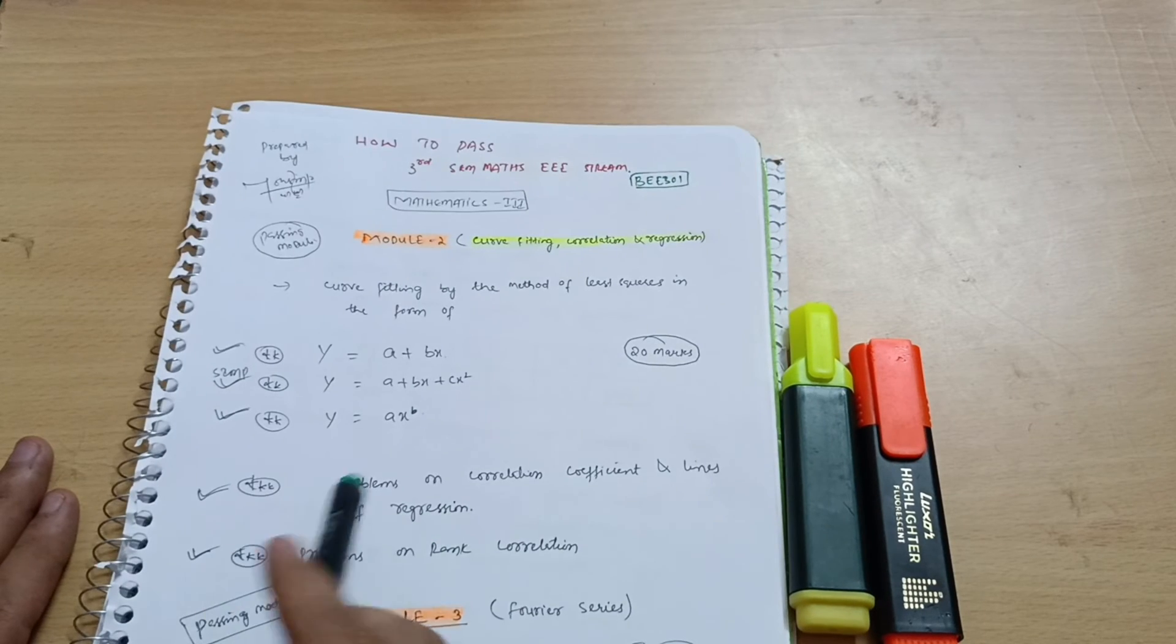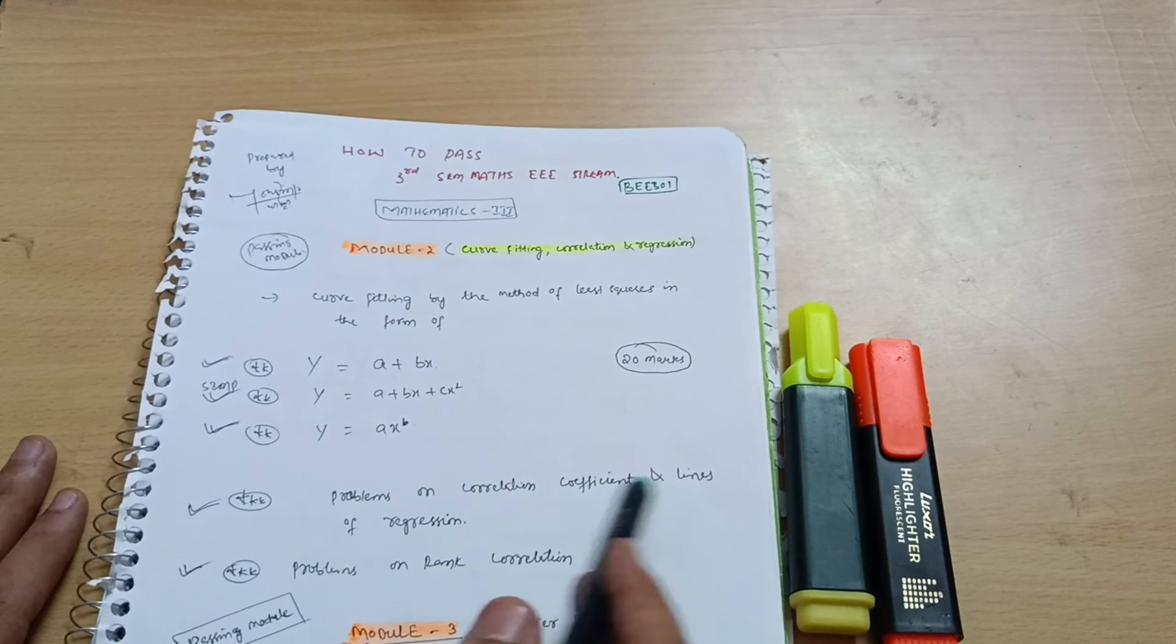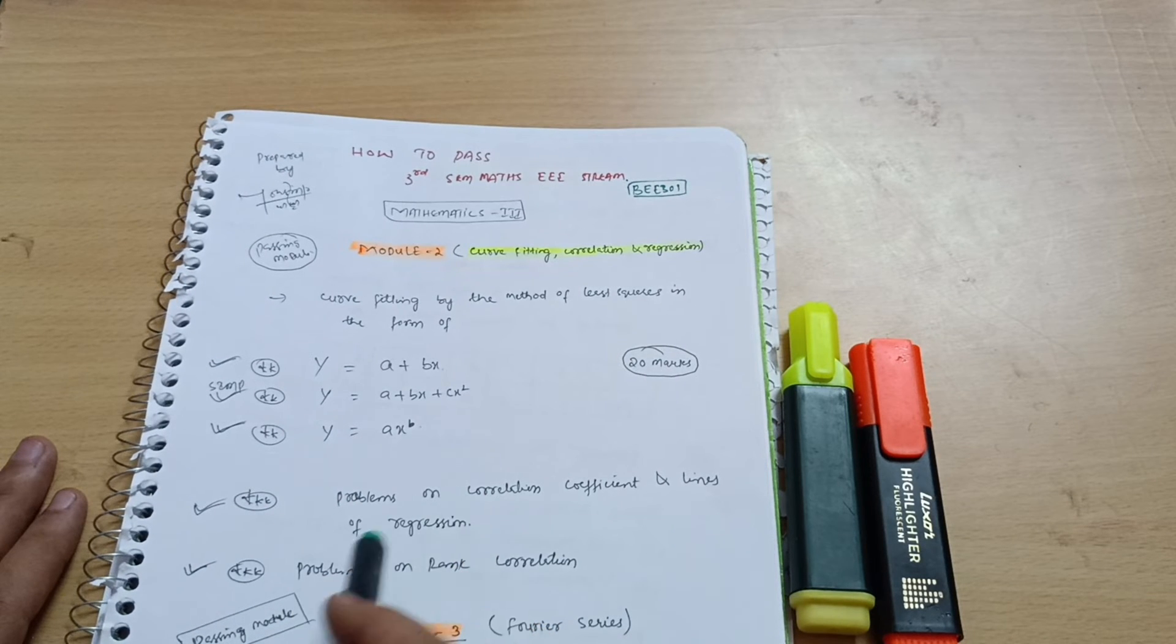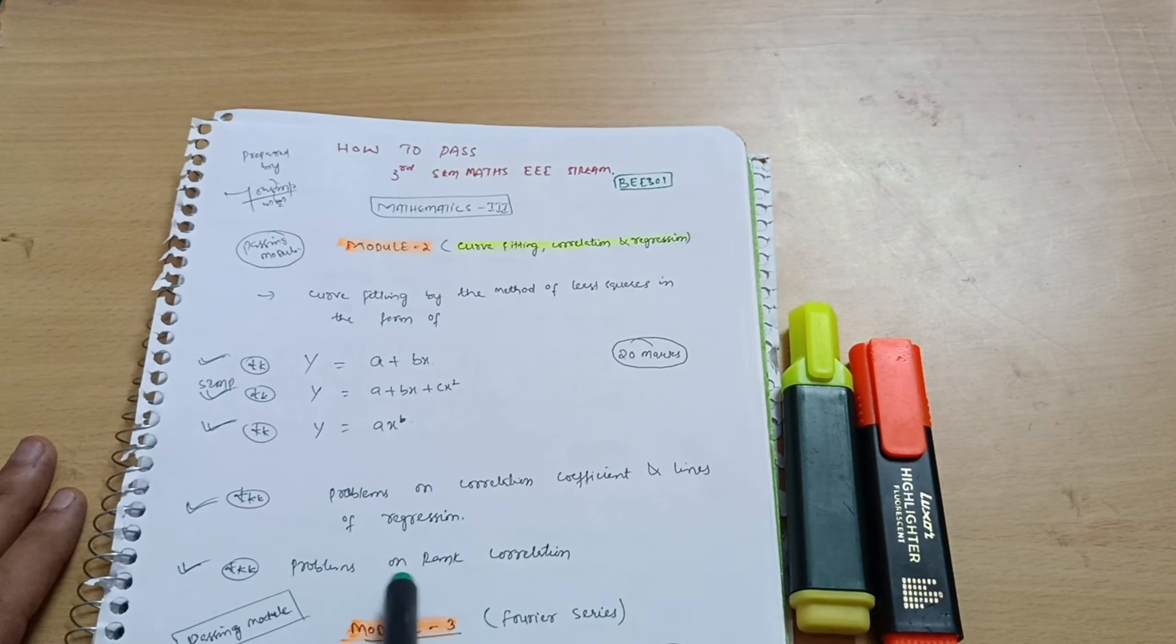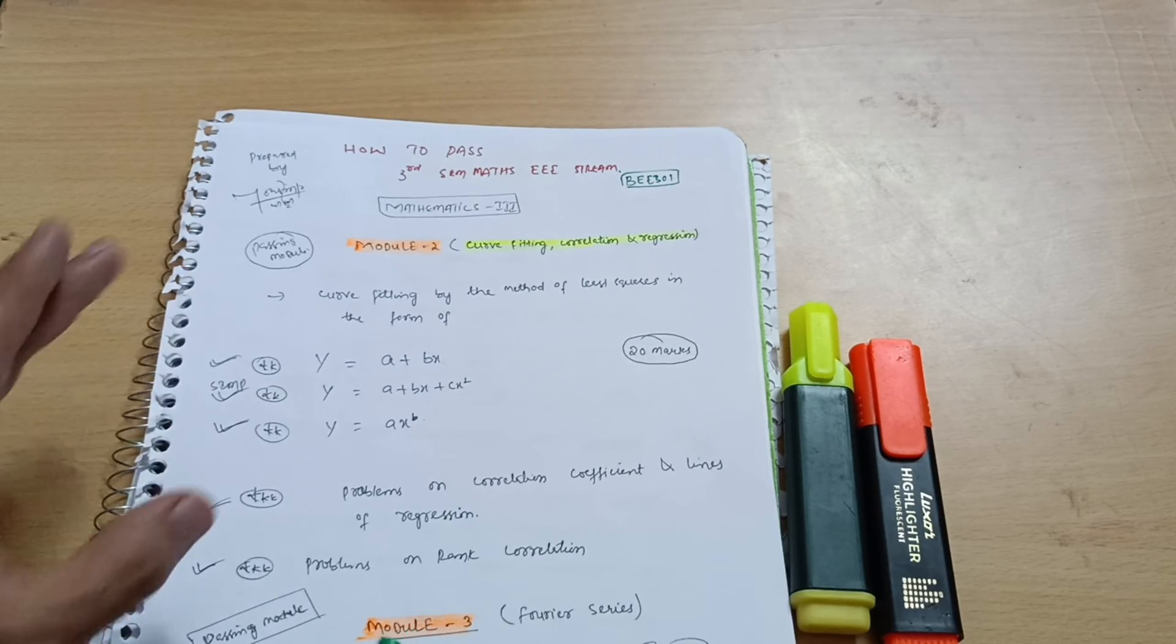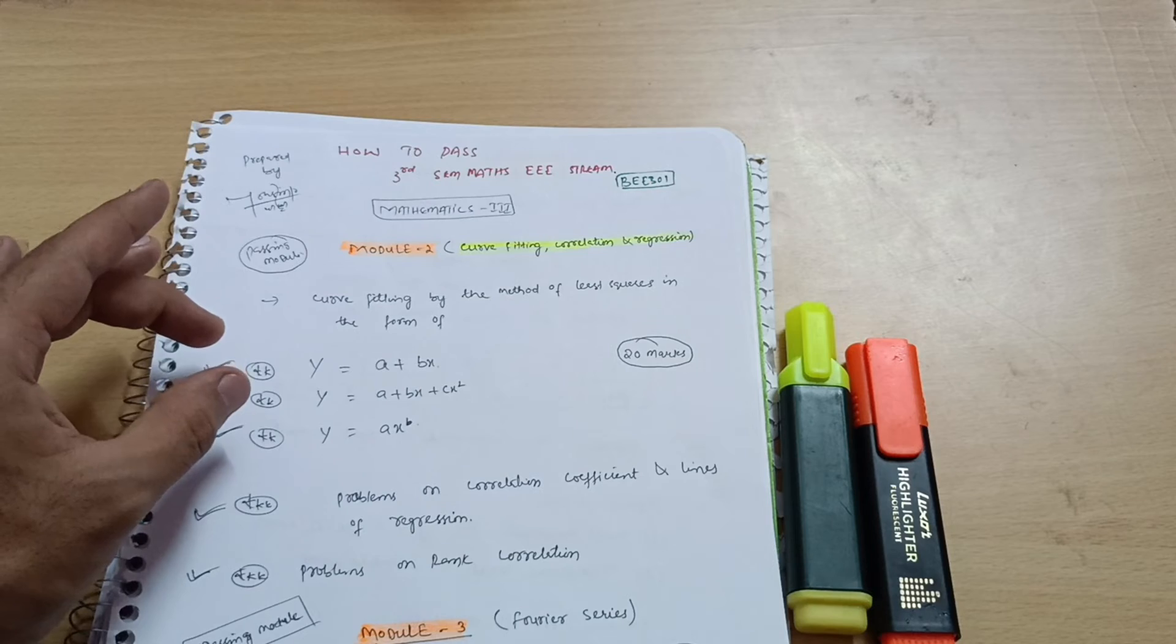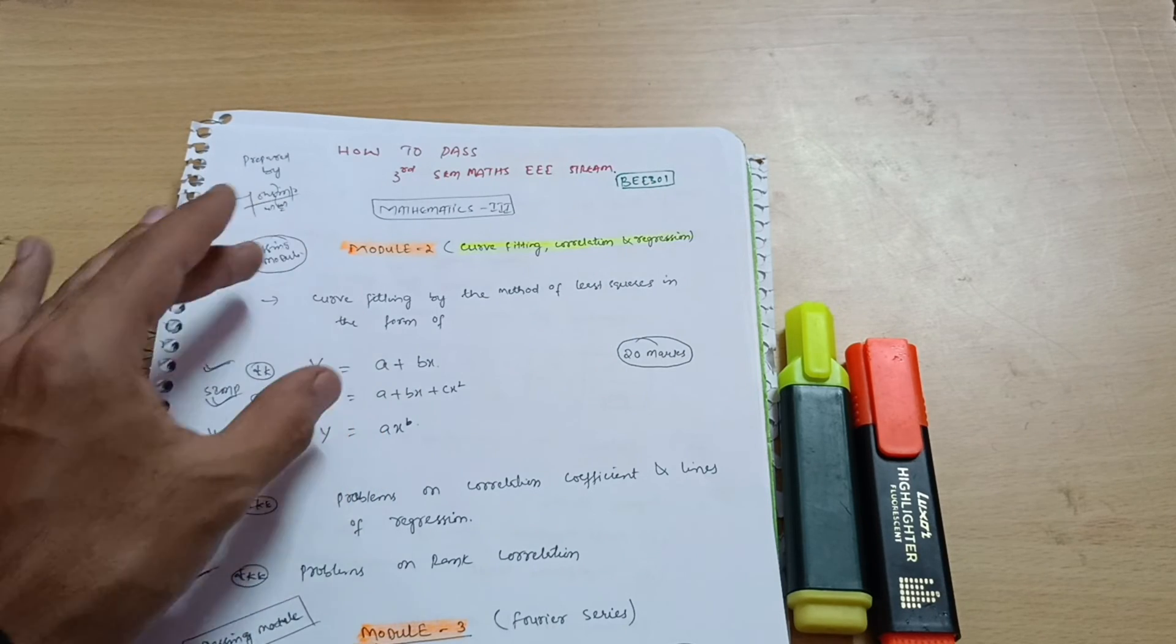Problems on correlation coefficient and lines of regression. This is again a simpler topic. Already I have made the videos for it also. Next is problems on rank correlation. These are the three topics which you should go through and you can easily acquire, you can easily grab 20 marks from Module 2.